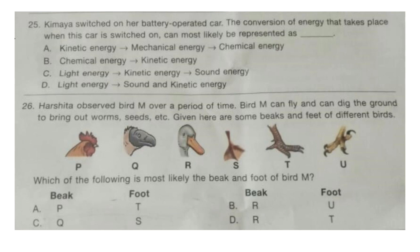Question 26. Harshita observed bird M over a period of time. Bird M can fly and can dig the ground to bring out worms, seeds, etc. Given here are some beaks and feet of different birds. Look at the pictures. Which of the following is most likely the beak and foot of bird M? The correct answer is option A: beak is P and foot is T. The bird can dig the ground to bring out worms, so it will be a scratching bird and it can fly, so it can be a hen. Answer is option A.